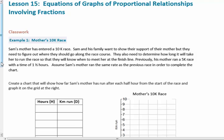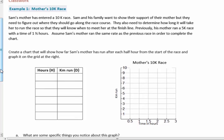So, this is lesson 2.15, Equations of Graphs of Proportional Relationships Involving Fractions. The first example: Sam's mother has entered a 10K race. Sam and his family want to show their support of their mother, but they need to figure out where they should go along the race course.